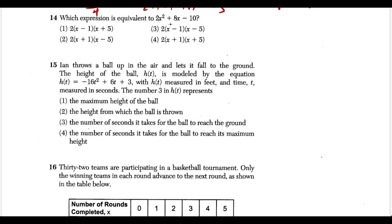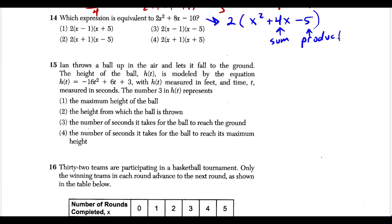For question fourteen, factor out a greatest common factor of two since all numbers are even, giving 2 times (x squared plus 4x minus 5). To factor x squared plus 4x minus 5, find two numbers with a sum of four and product of negative five. That's five and negative one: five minus one equals four, and five times negative one equals negative five. So we get 2(x plus 5)(x minus 1), matching choice one.